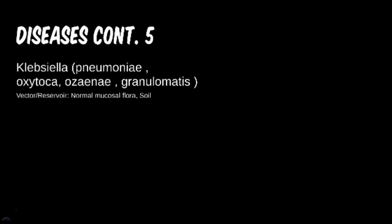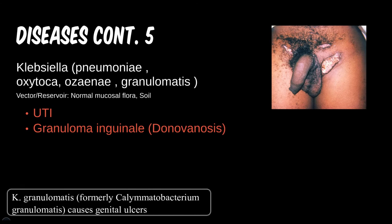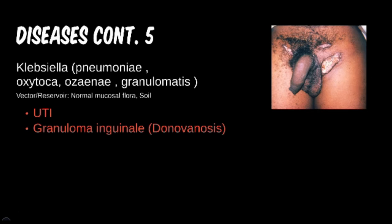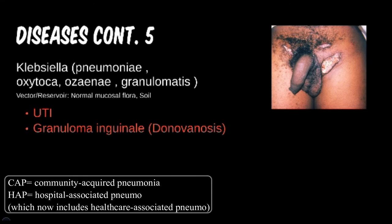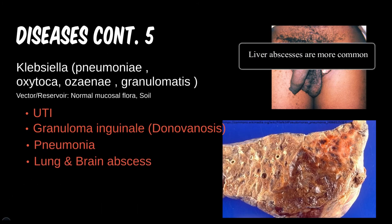Klebsiella is a bug of various locations and pathologies — some species like the lungs, others like the genital region. Since it is also found as normal flora in the human body and in the soil, it can be a fairly common pathogen to be concerned about. It can cause UTI, though gram-positive bugs or E. coli are much more common. It also causes granuloma inguinale, which should be separated from other genital infections. It is a painless lesion, which easily separates it from the painful H. ducreyi. Klebsiella pneumoniae, though less common than Strep pneumo, is still a concern for pneumonia presentations and is a common nosocomial infection, particularly for hospital-associated pneumonias.